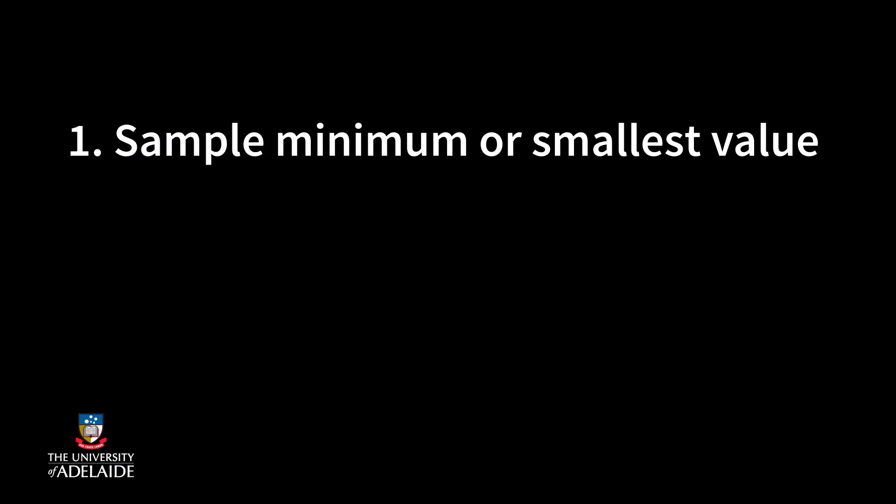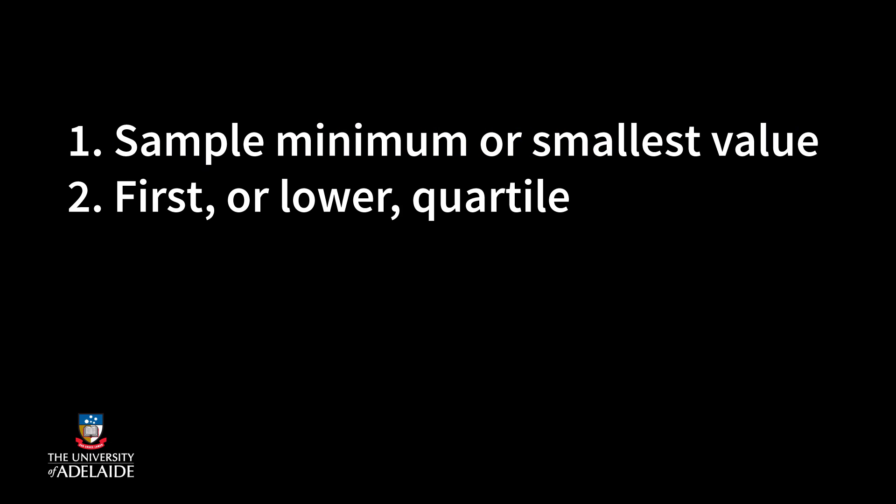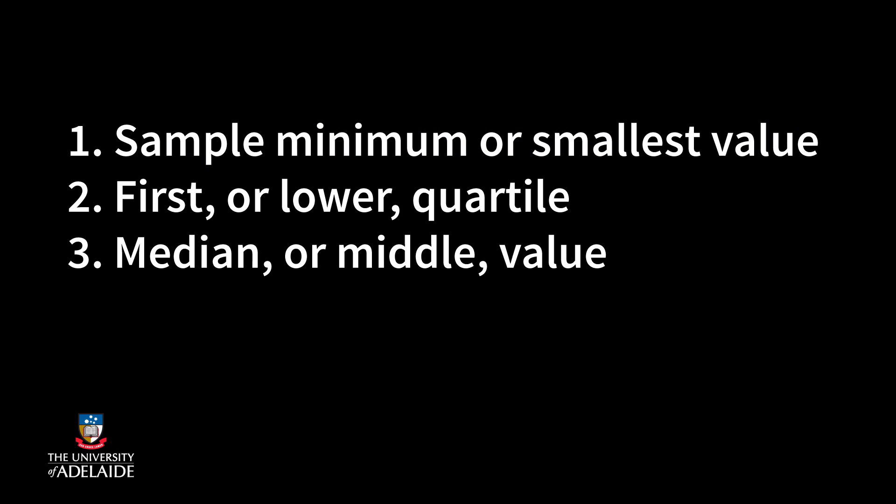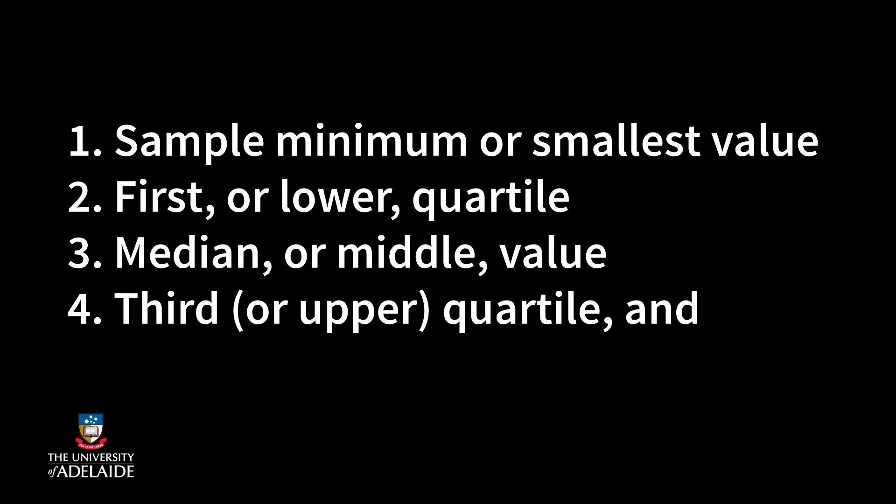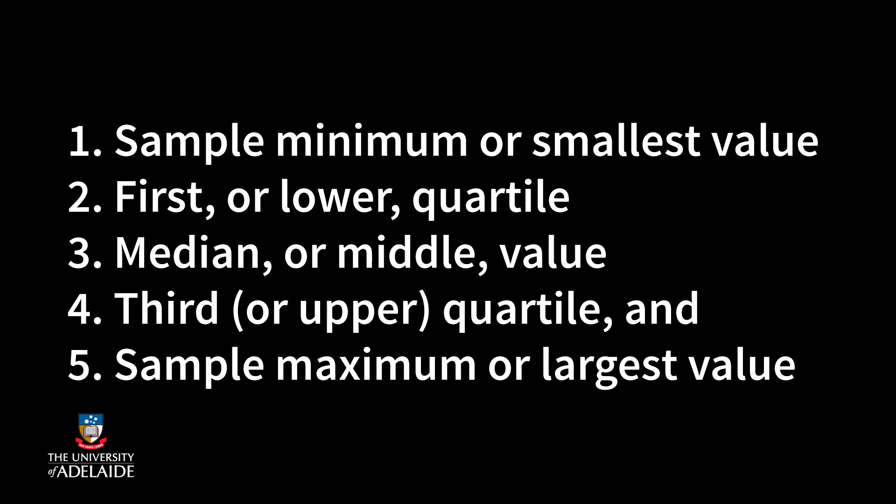Statisticians often talk about the five-number summary, which describes a distribution of data in just five numbers. These are the sample minimum, or the smallest value; the first or lower quartile; the median or middle value; the third or upper quartile; and the sample maximum, or the largest value.